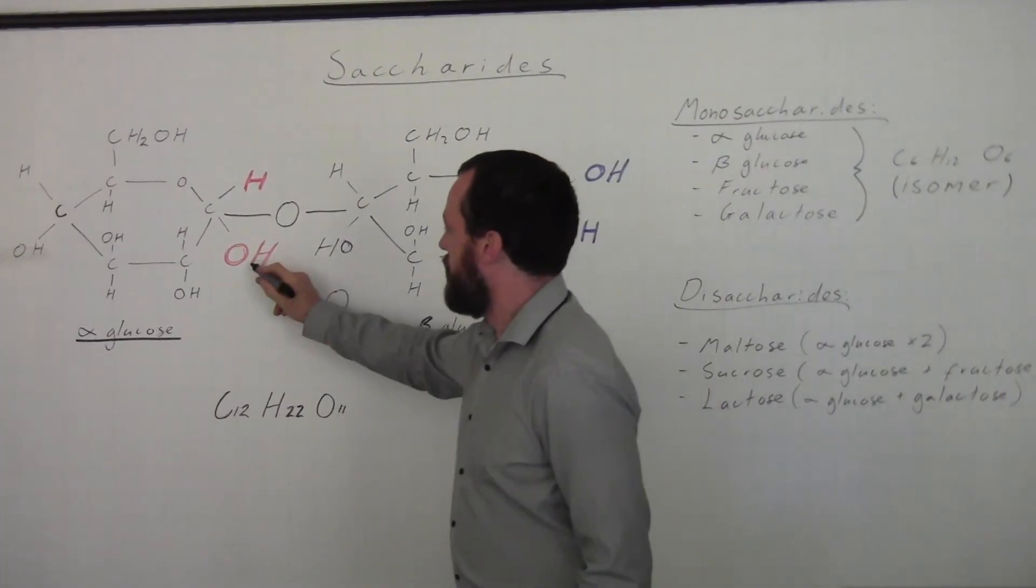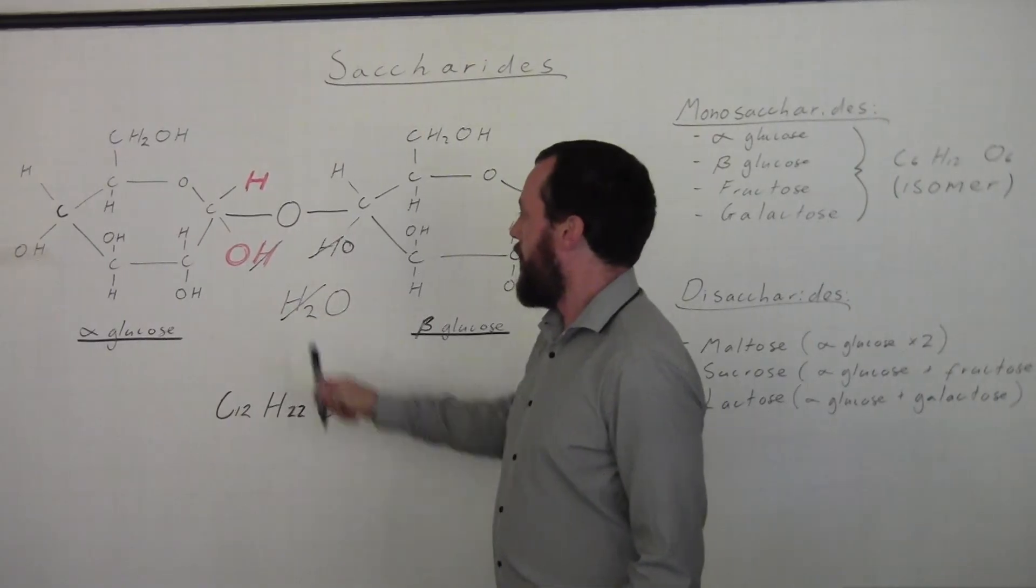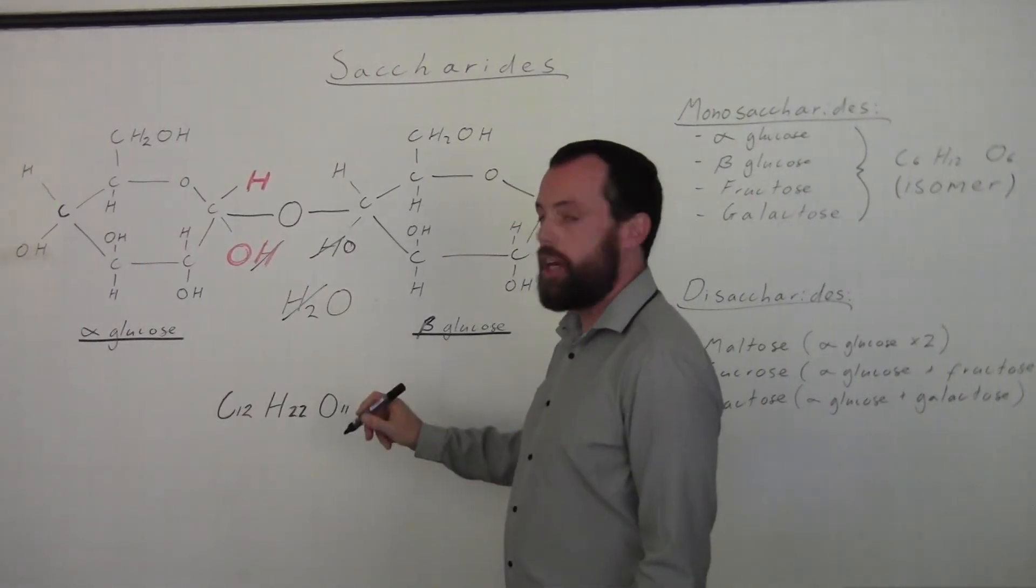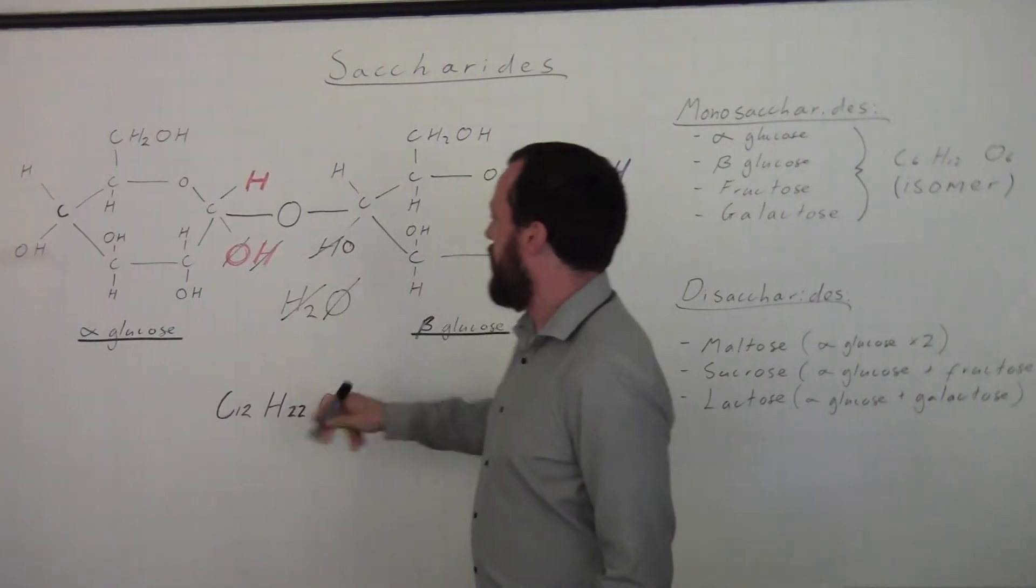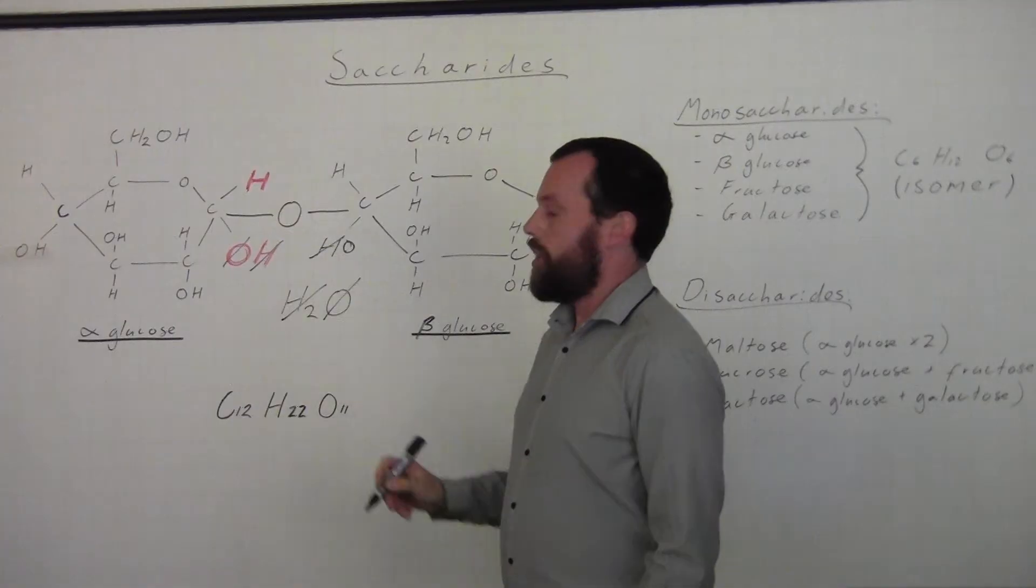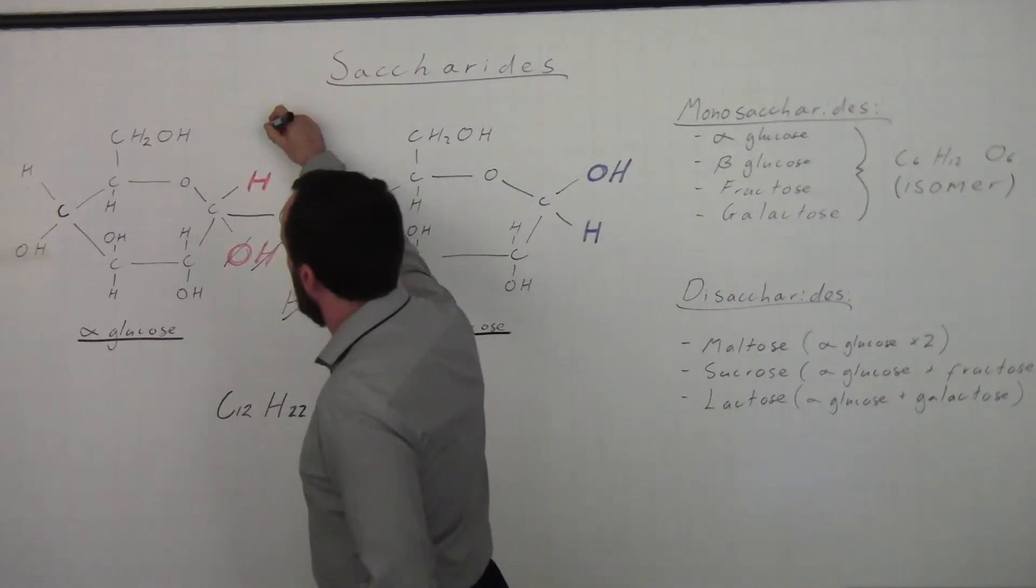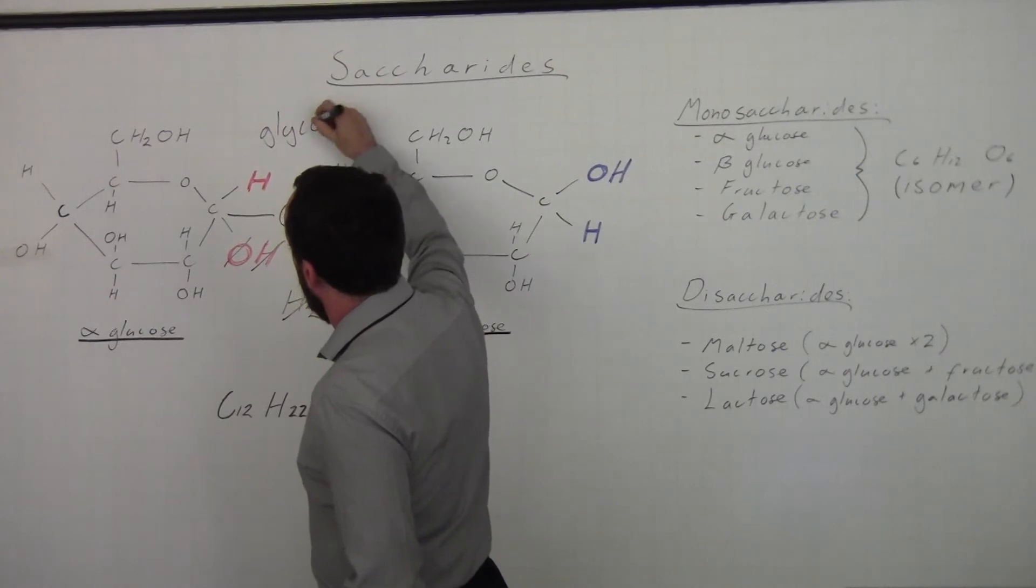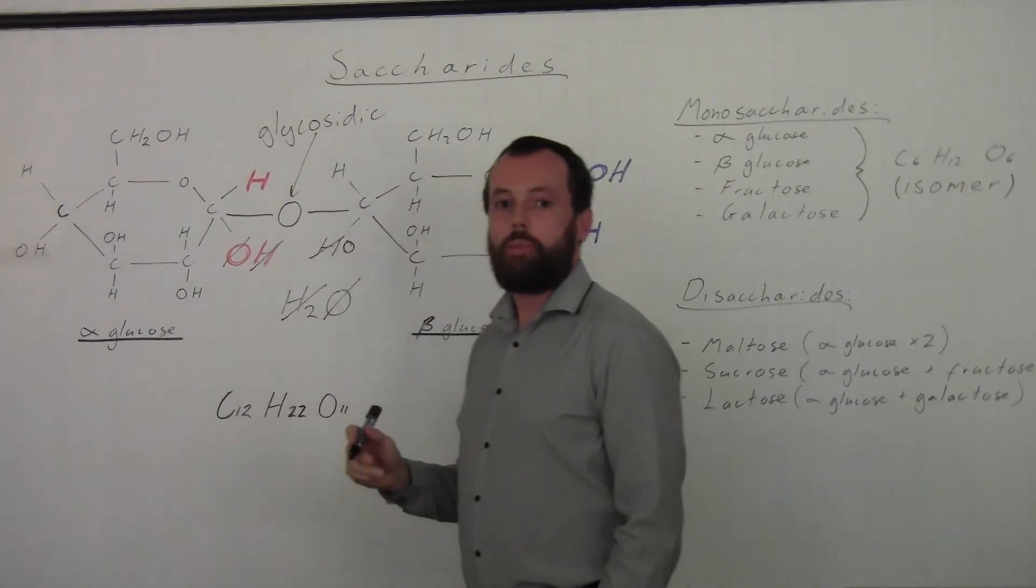So you can see where the hydrogens have come from, there and there, to form these hydrogens, and one of the oxygens is used here to form water, whereas the other oxygen is held in the middle of this bond. The bond has a name: a glycosidic bond.